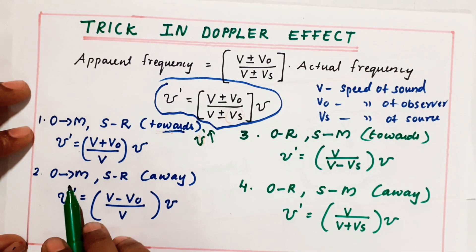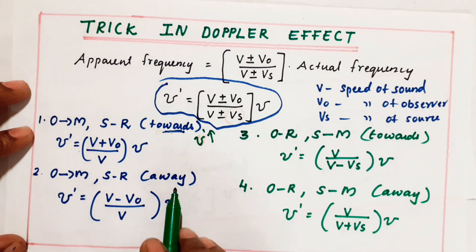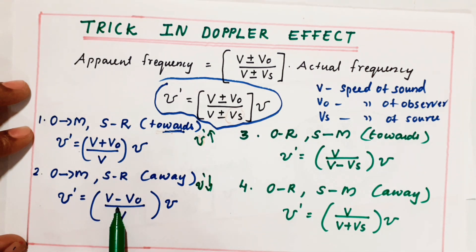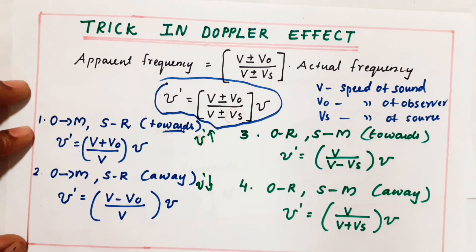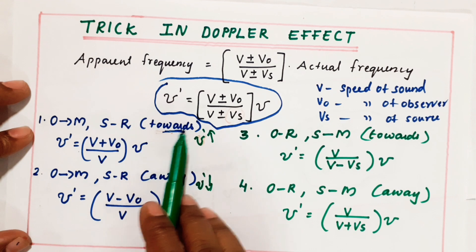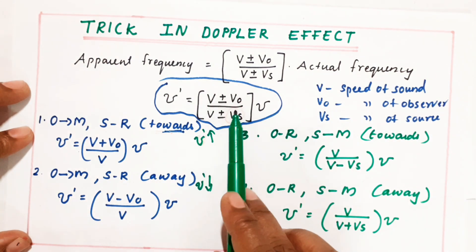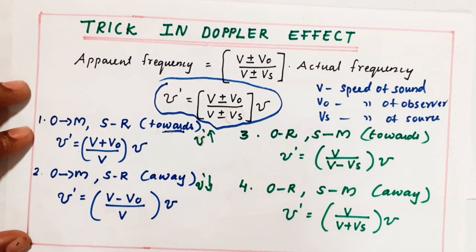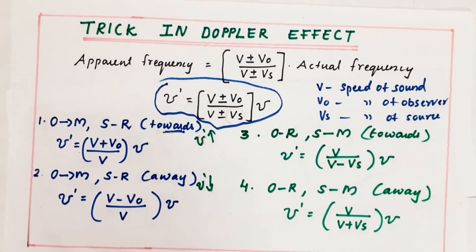Now the reverse case: observer moving, source at rest, but observer is moving away. Away means the apparent frequency should decrease. So instead of plus, we should get minus. If moving towards, apparent frequency increases; if moving away, apparent frequency decreases. So the equation becomes V minus V_O by V, into nu.